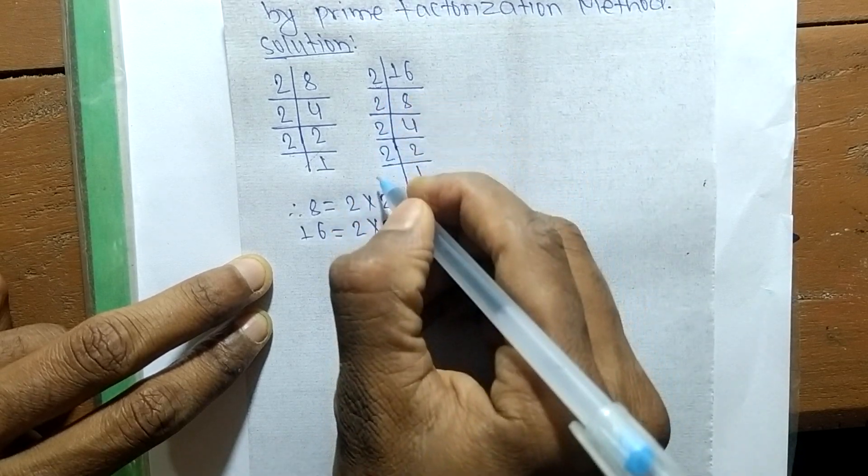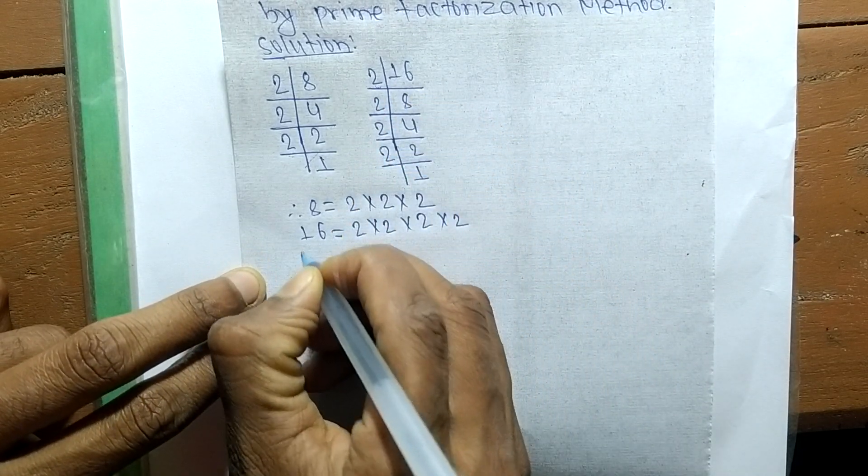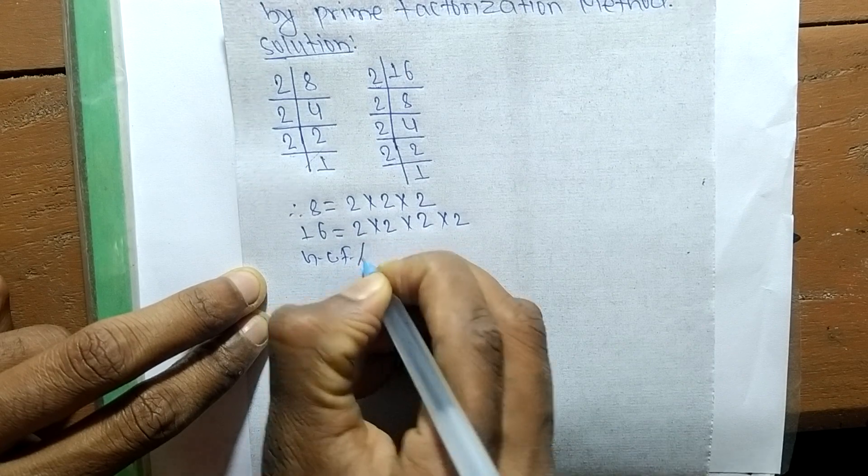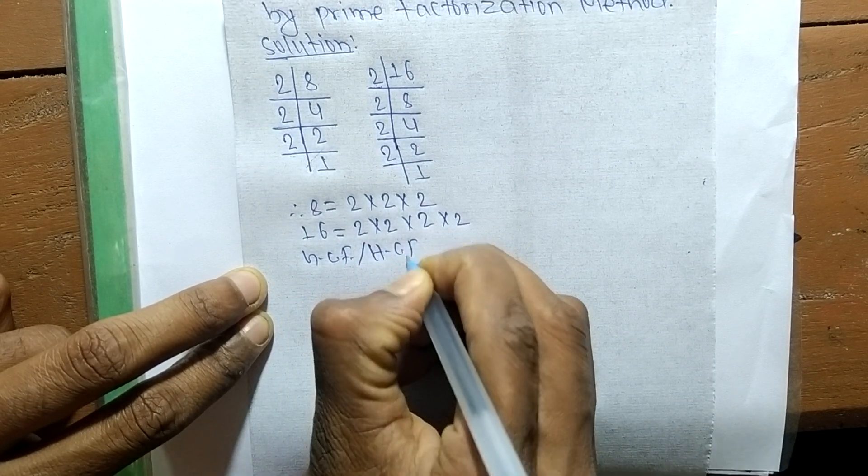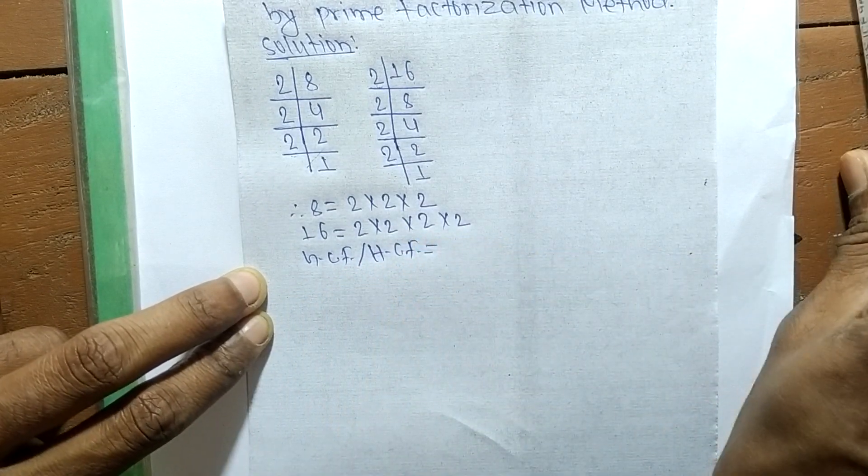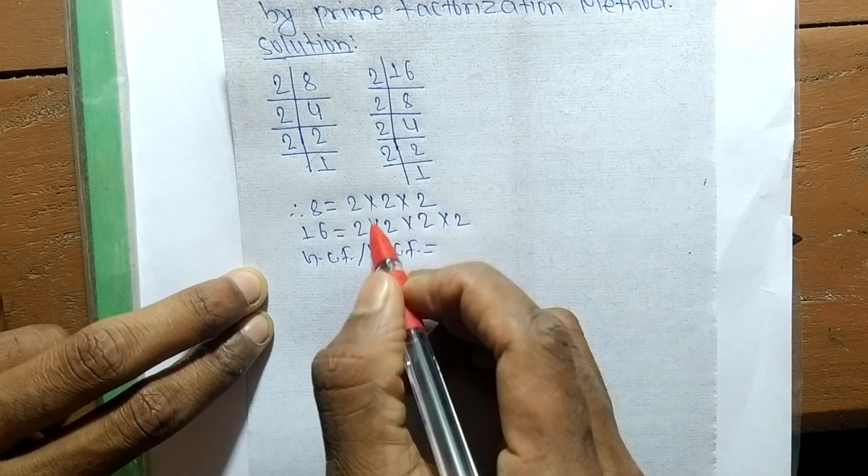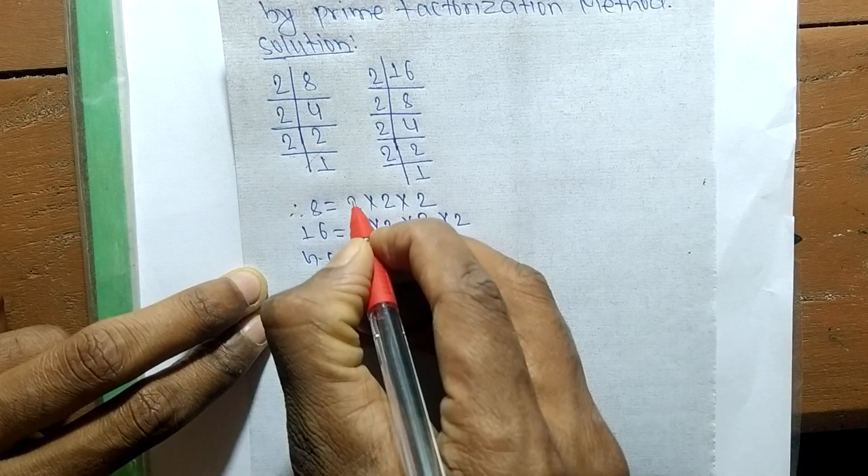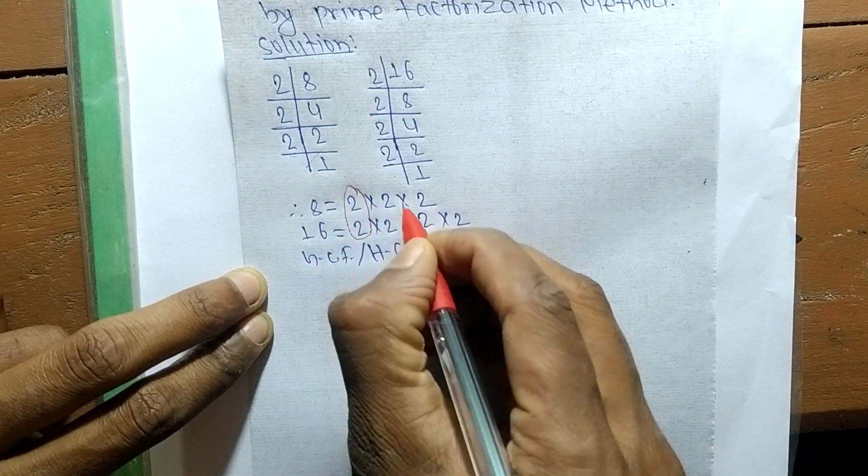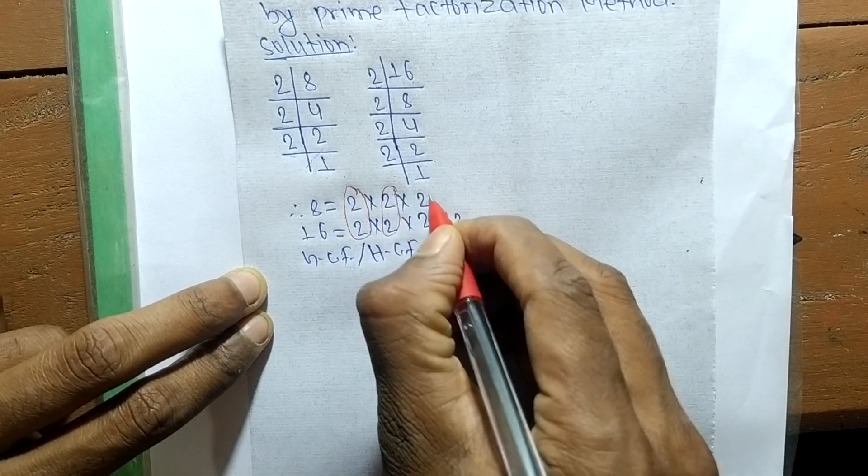From these prime factors, the GCF or HCF is equal to—now we have to find out the common elements in all these prime factors. The first common element is 2, another 2, and another 2.